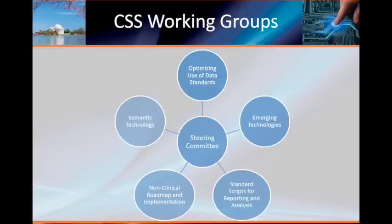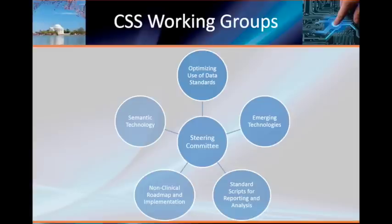Right now we have these working groups and the annual conference in March — we had it this past March and are already in our planning stages for next March. As part of that are the working groups doing the actual projects and work. We have a steering committee which oversees these working groups, making sure they're aligned across groups and with other organizations such as CDIS and Transcelerate — to make sure we're all moving in the same direction. There are five groups currently: optimizing the use of data standards, emerging technologies, a semantic technology group, a non-clinical roadmap and implementation, and standard scripts for reporting and analysis.